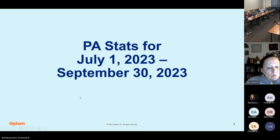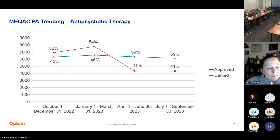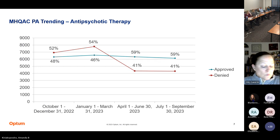We will then go ahead and review our PA stats for July 1st through September 30th. Here are our overall stats: we had just over 37,000 go through our silent AUTH PAs, just over 29,000 were approved and just over 8,000 denied. For antipsychotic therapy, we've really leveled out after we removed the 15-day edit and the low-dose edit. We saw it drop pretty drastically in the April timeframe and since then it's steadied out.